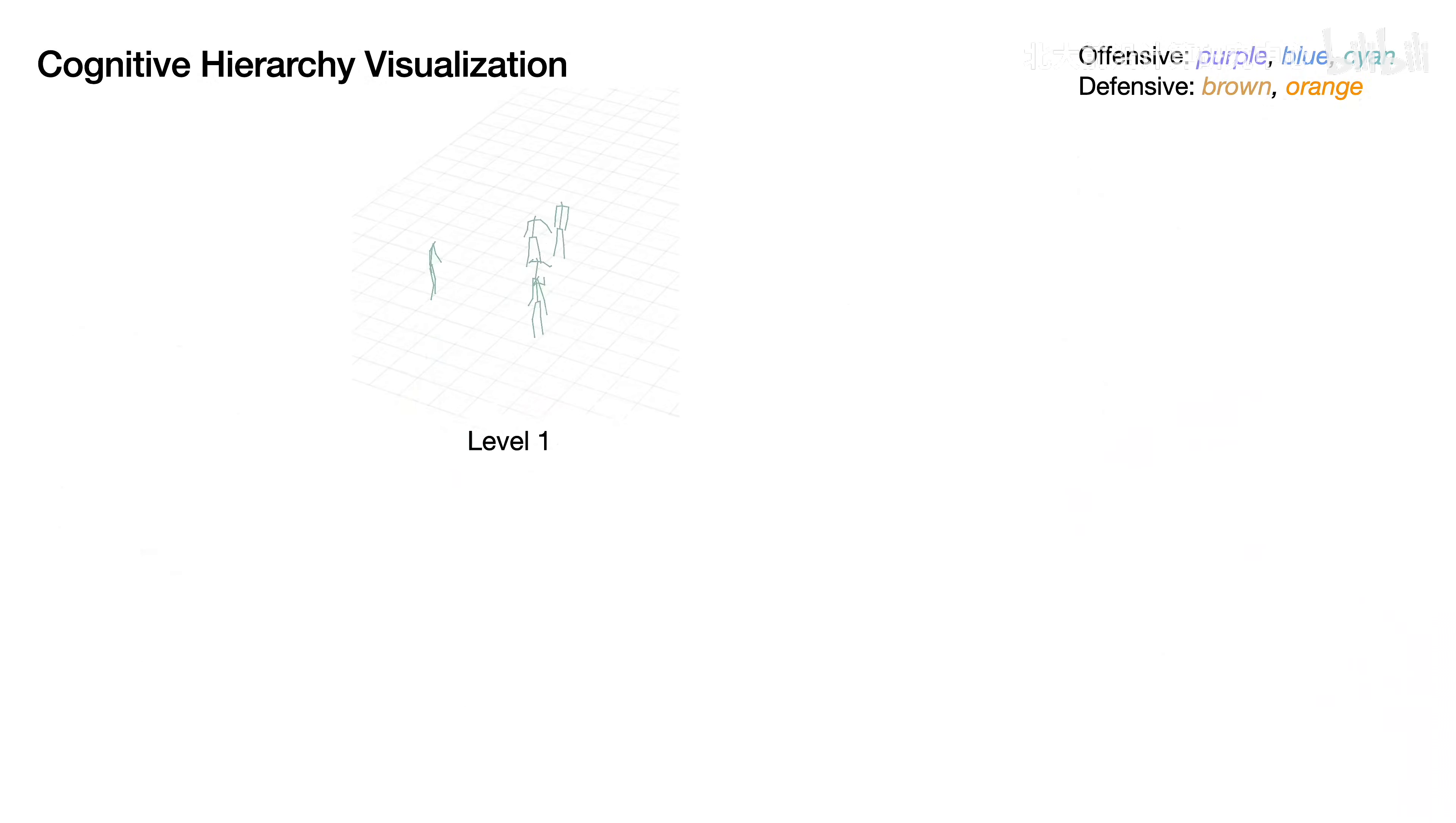Furthermore, we visualize the actions produced by the intermediate policy networks to interpret the recursive decision-making process. At Level 1, Player Purple makes a passing move towards Player Blue based on the historical motion trend.